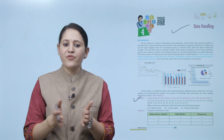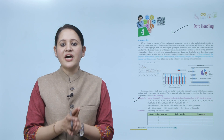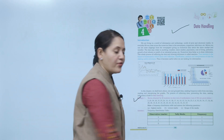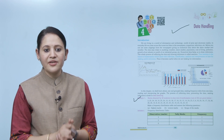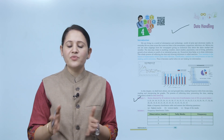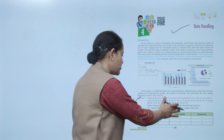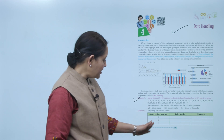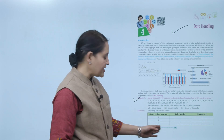Marks obtained by 40 students in a class test of mathematics out of 25 are given below. We need to make a frequency distribution table and answer the following questions. We'll start from the minimum mark and go up to the maximum mark.